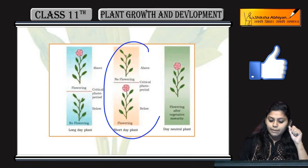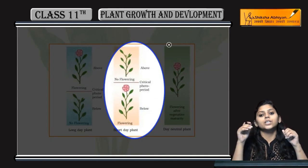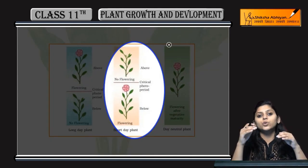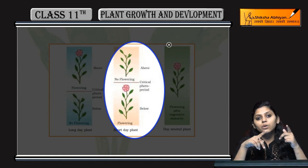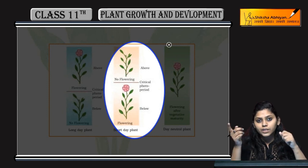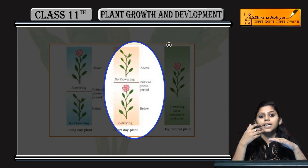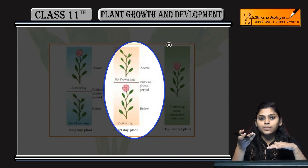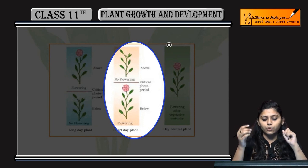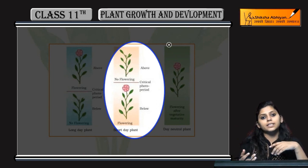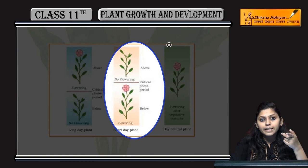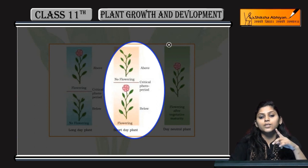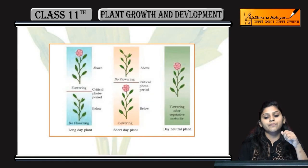हम short day plant की बात करें. Critical photoperiod से अगर कम light duration मिली है, तब flowering होगी. अगर ज़्यादा light period मिलेगा तो flowering नहीं होगी. या फिर हम ऐसा भी कह सकते हैं — ज़्यादा light period मिलेगा या फिर कम dark period मिला, तो भी flowering नहीं होगी.